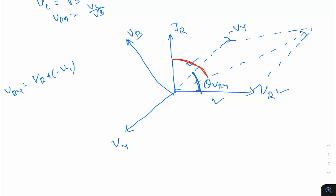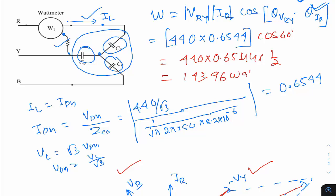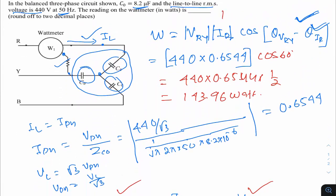Substituting into the wattmeter equation: W = V_RY × I_R × cos(60°) = 440 × 0.6544 × 0.5 = 143.96 W. So the wattmeter reading is 143.96 W.